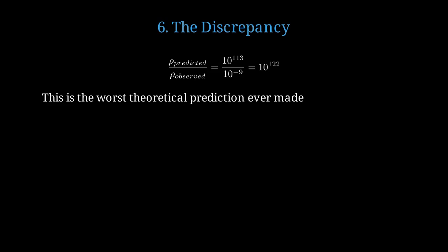Let's compare these two numbers directly. The ratio is 10 to the 113 divided by 10 to the minus 9, which equals 10 to the 122. Our prediction is off by 122 orders of magnitude. This is the worst theoretical prediction ever made in physics.